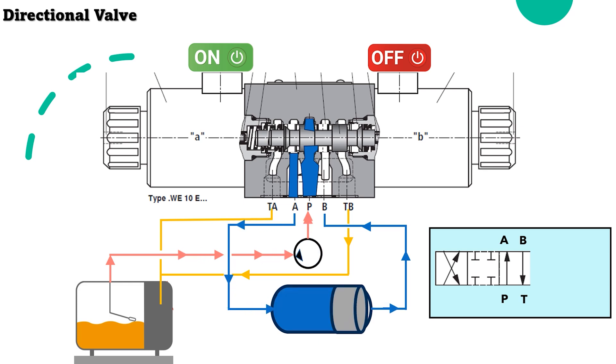The cylinder will move to end position. Return oil will flow from B to TB tank return.